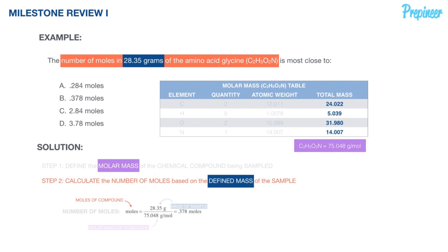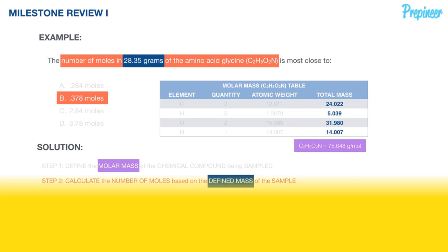The number of moles of glycine in the defined sample is 0.378 moles. The correct answer is B: 0.378 moles.